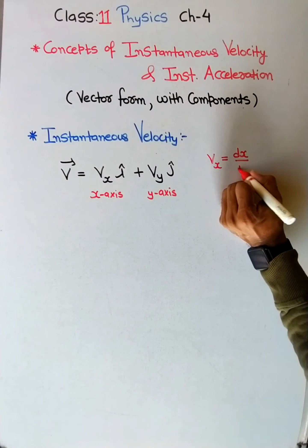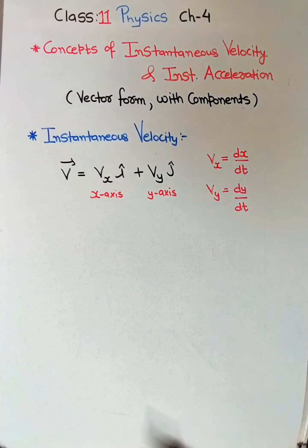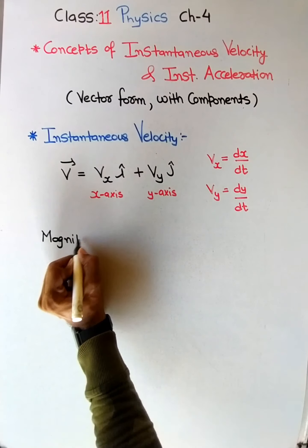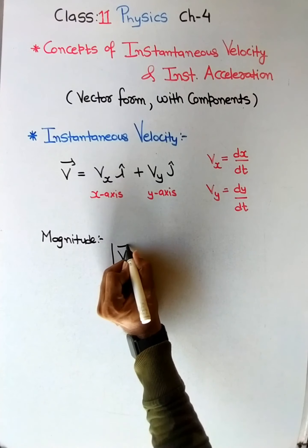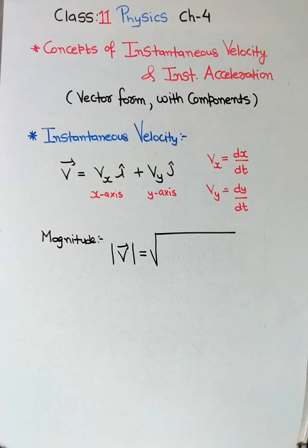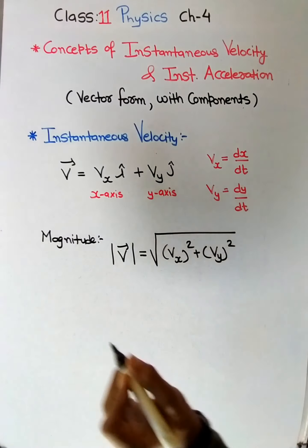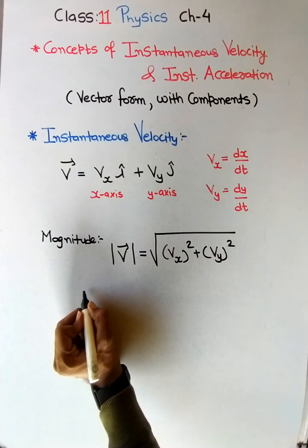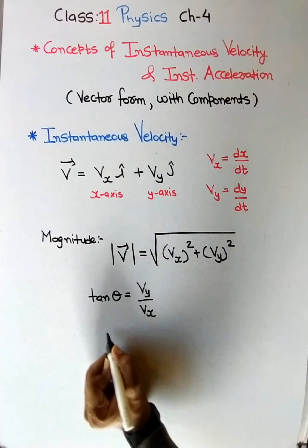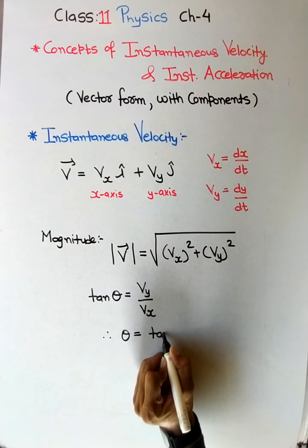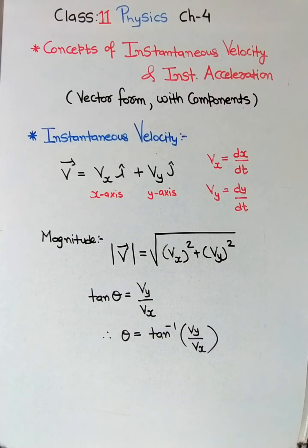vx = dx/dt and vy = dy/dt. For the magnitude of instantaneous velocity when the velocity vector is in component form, we take the modulus: |v| = √(vx² + vy²). For direction, tan θ = vy / vx, where vy is always in the numerator. Therefore, θ = tan⁻¹(vy / vx). This covers all aspects of instantaneous velocity.